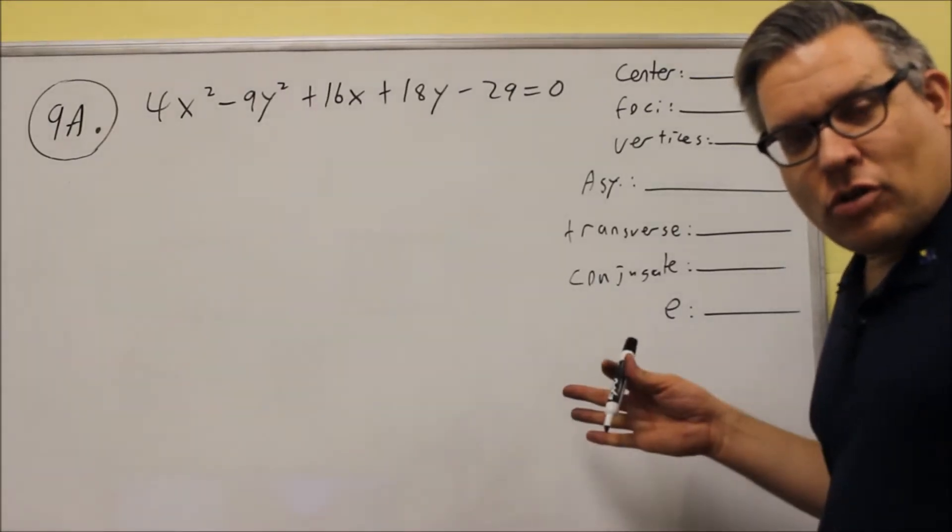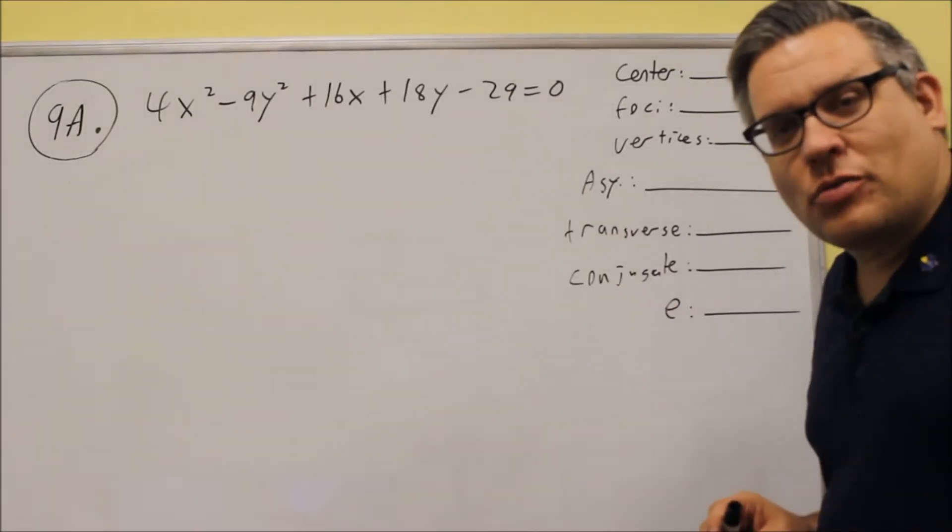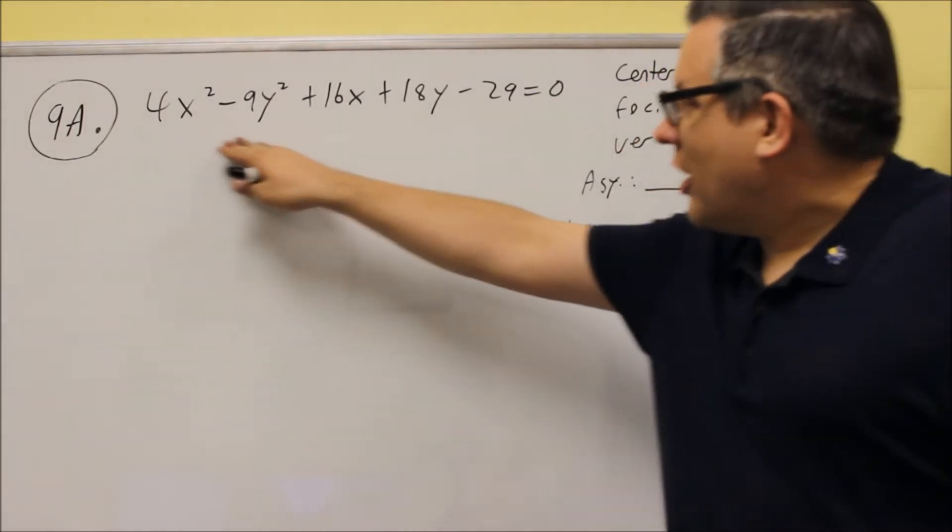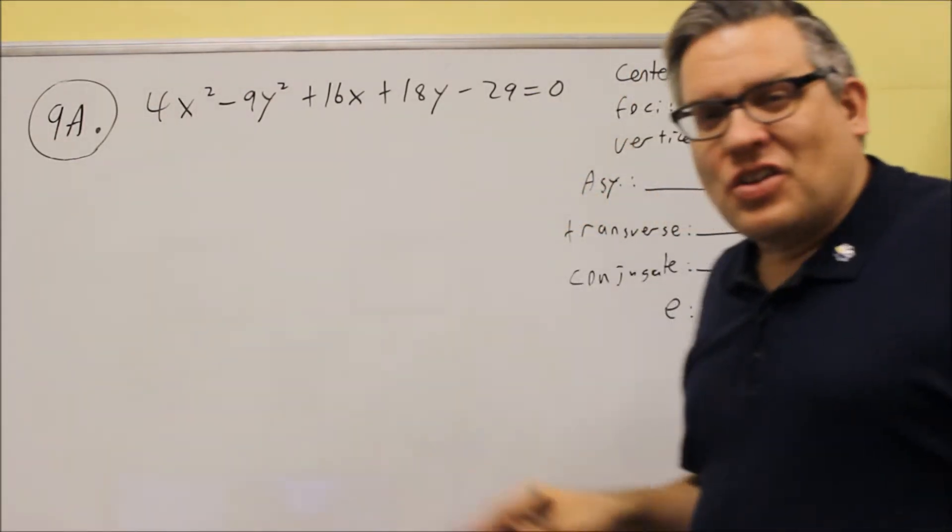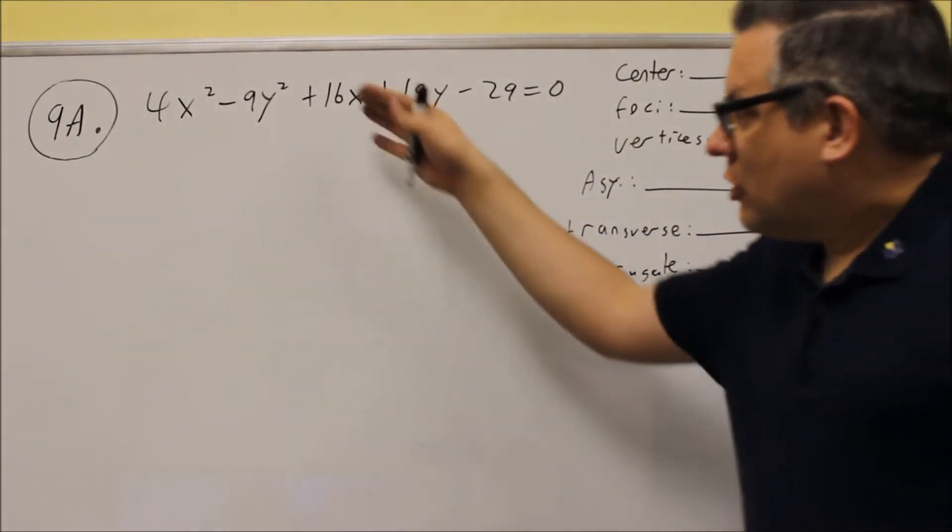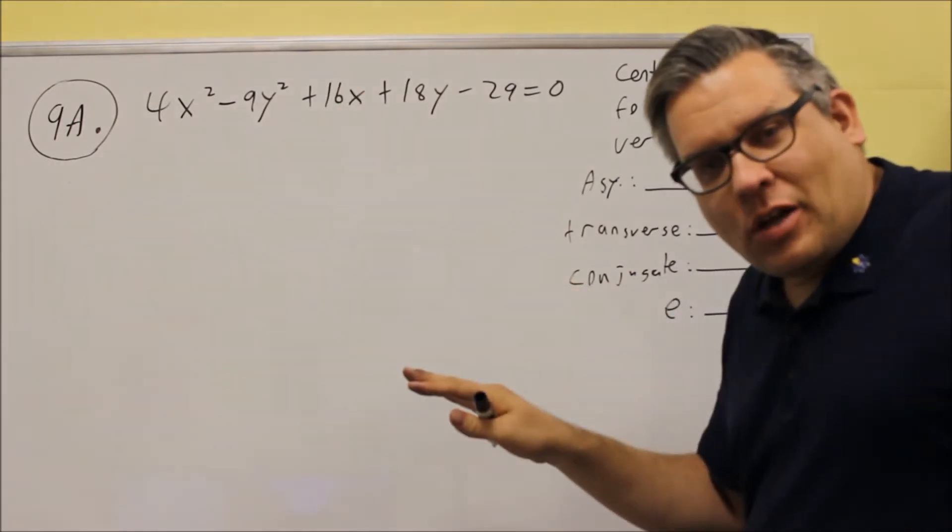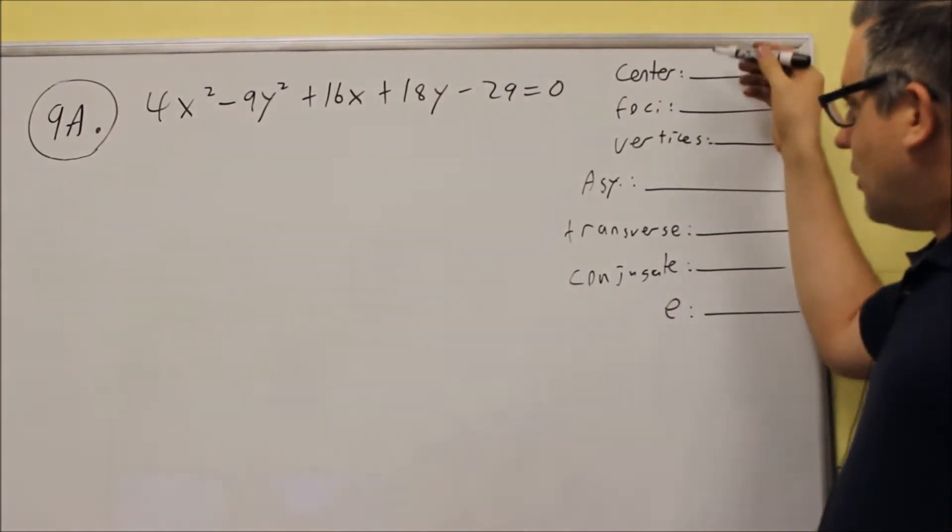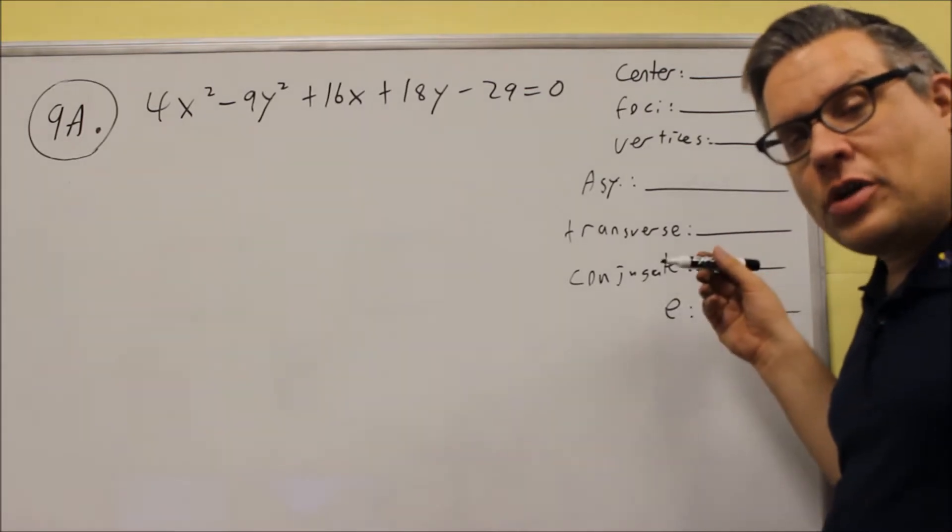Okay, number nine. Let's look for what kind of graph this is going to be. So looking at this the way it is, this is one where you have to do the complete the square steps again. But before we even do that, if you're not sure what kind of graph this is going to be,